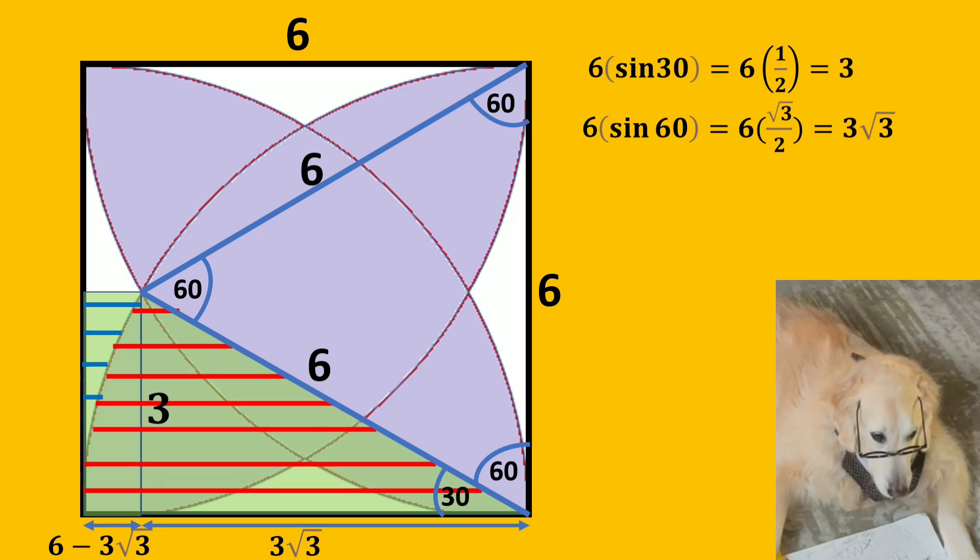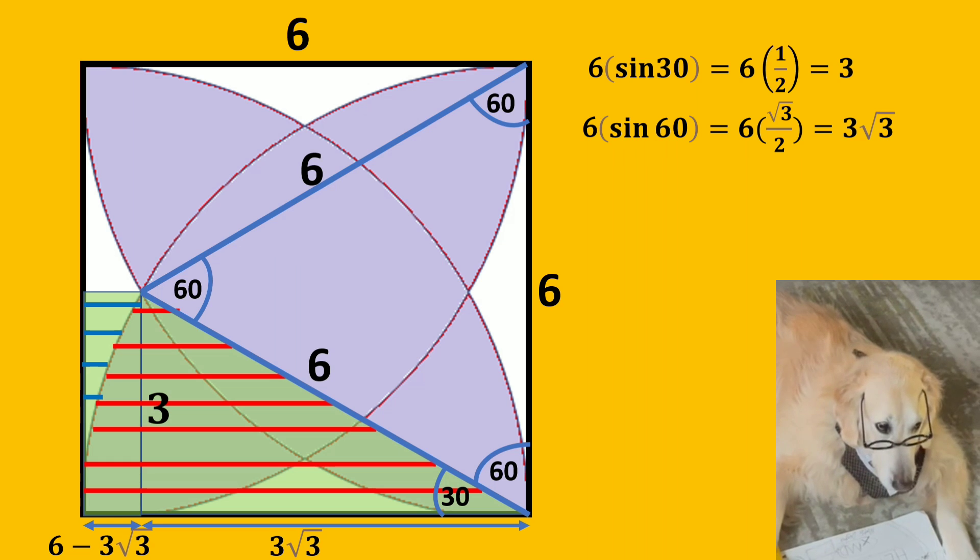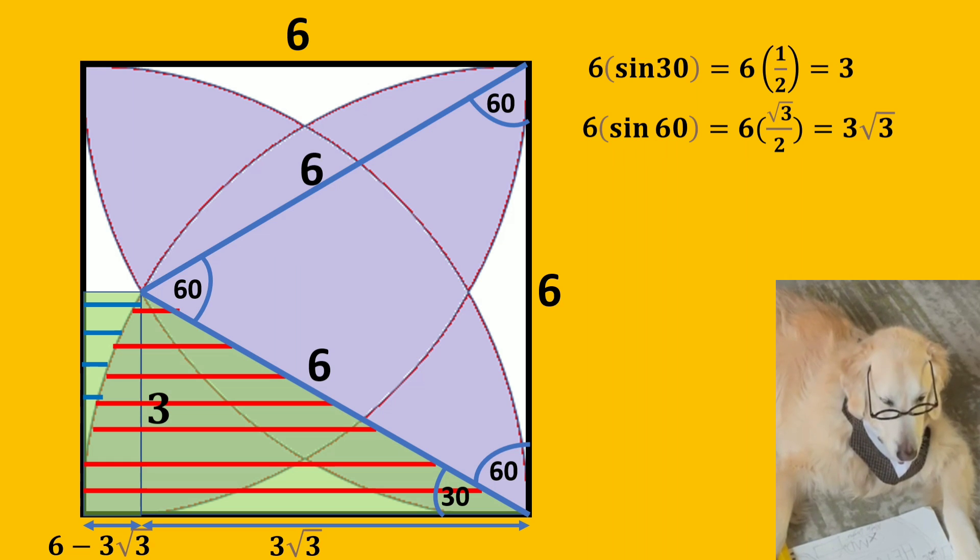Because the angles of an equilateral triangle are 60, we can use this to find the other lengths. We can use a little bit of trigonometry here. We know sine of 30 and sine of 60 values.